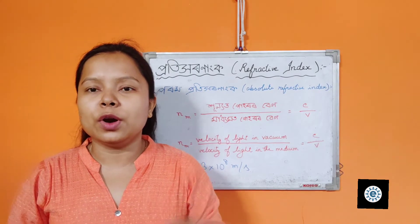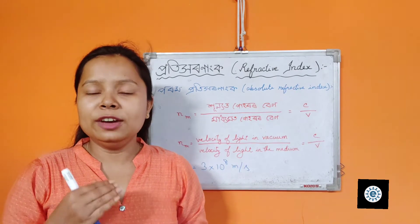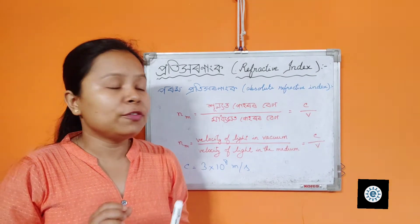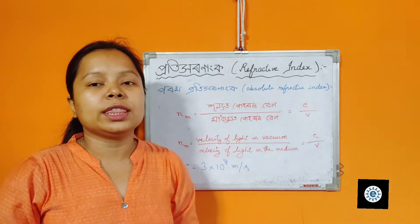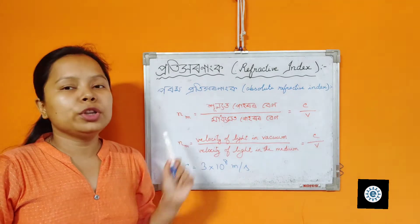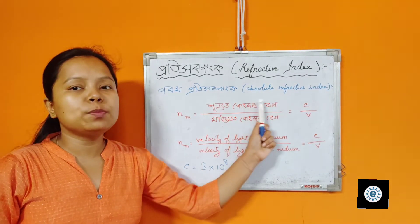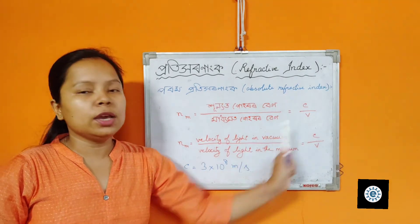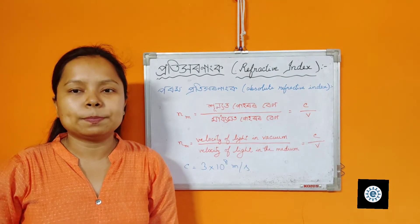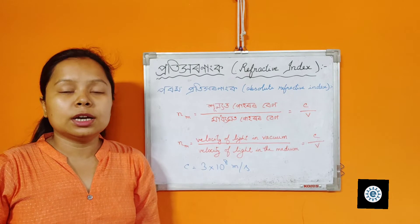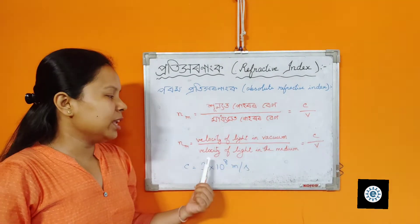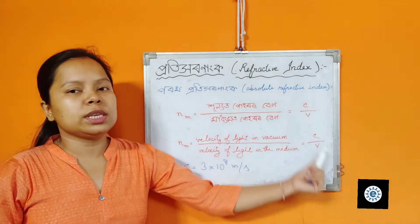When the first medium is considered to be vacuum while calculating refractive index, then that refractive index is called absolute refractive index. If nm is the refractive index of that medium with respect to vacuum, then nm is equal to velocity of light in vacuum divided by velocity of light in the medium, equal to c divided by v.